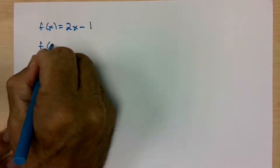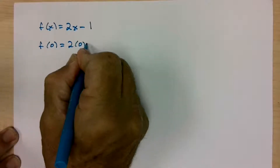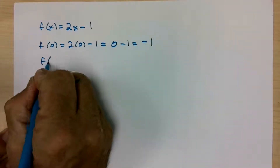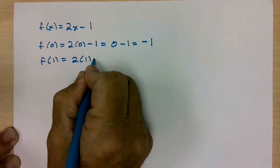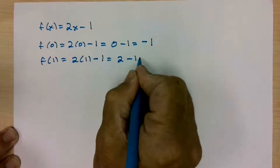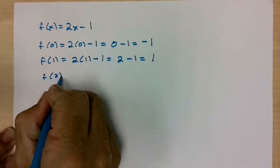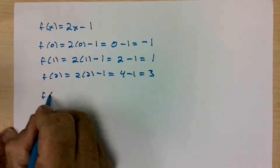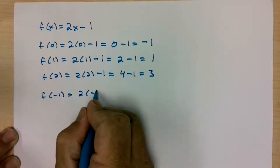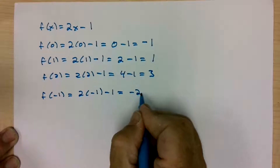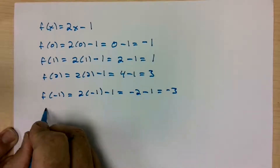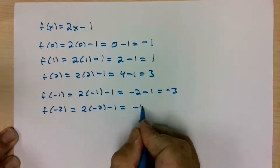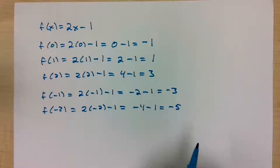f of 0 is 2 times 0 minus 1, which is 0 minus 1, which is negative 1. f of 1: plug the 1 in parentheses — 2 times 1 minus 1 gives 2 minus 1, which equals 1. f of 2: 2 times 2 minus 1 is 4 minus 1, which is 3. For negative values: f of negative 1 is 2 times negative 1 minus 1, giving negative 2 minus 1, which is negative 3. f of negative 2 is 2 times negative 2 minus 1, which is negative 4 minus 1, which is negative 5.